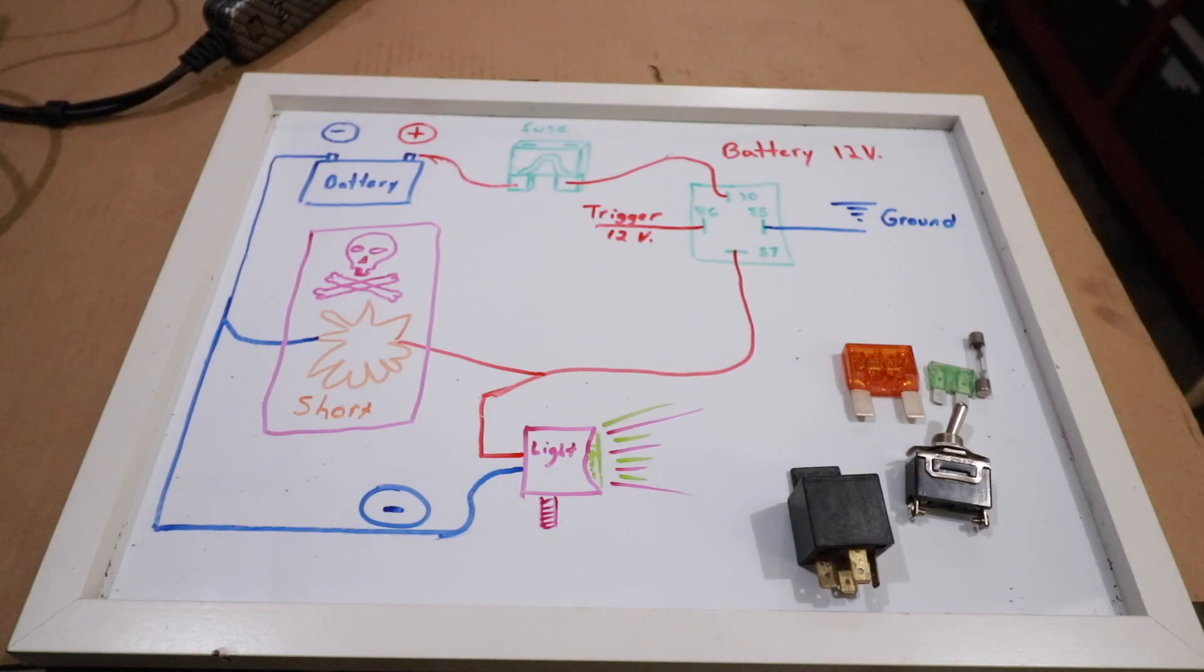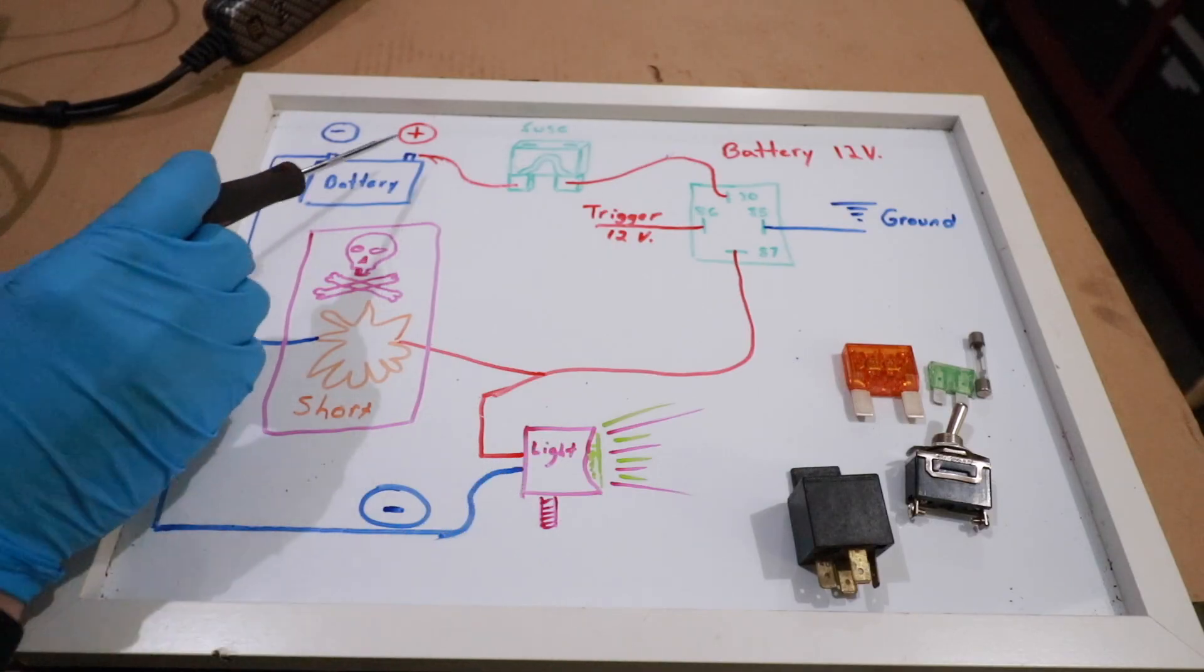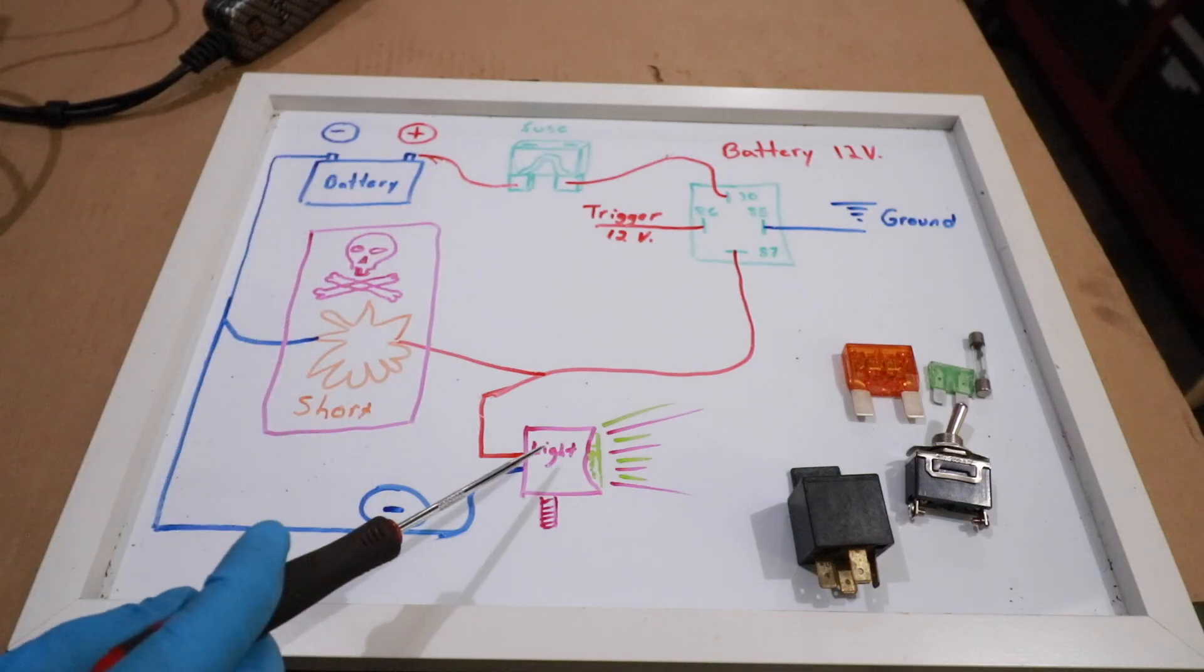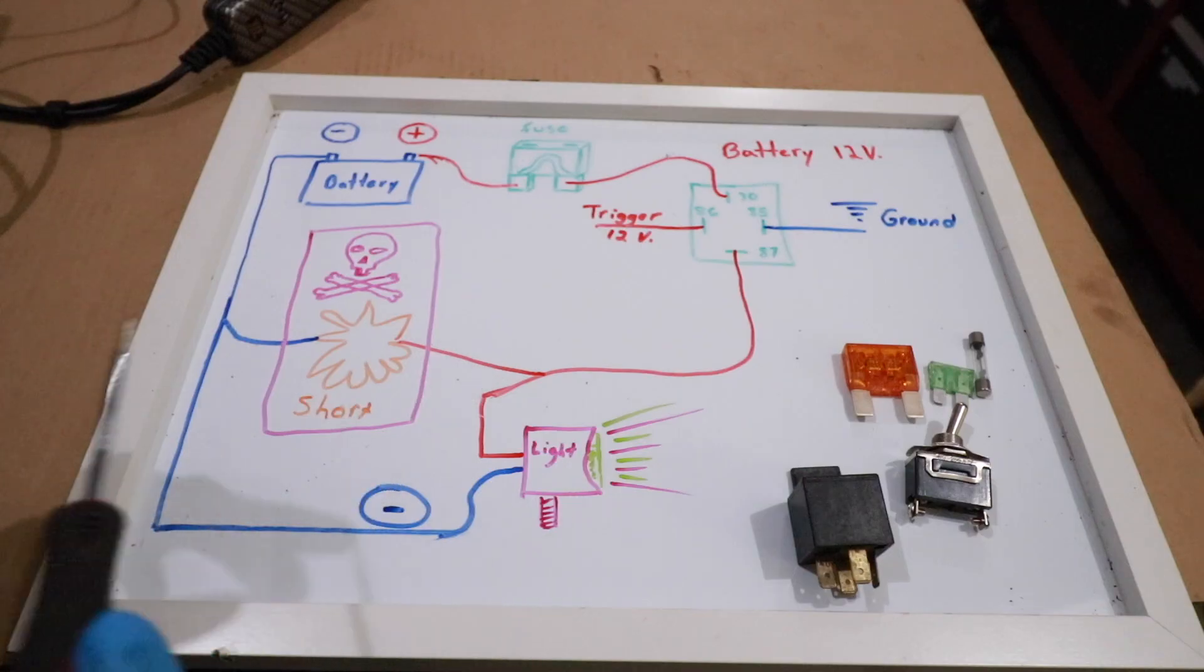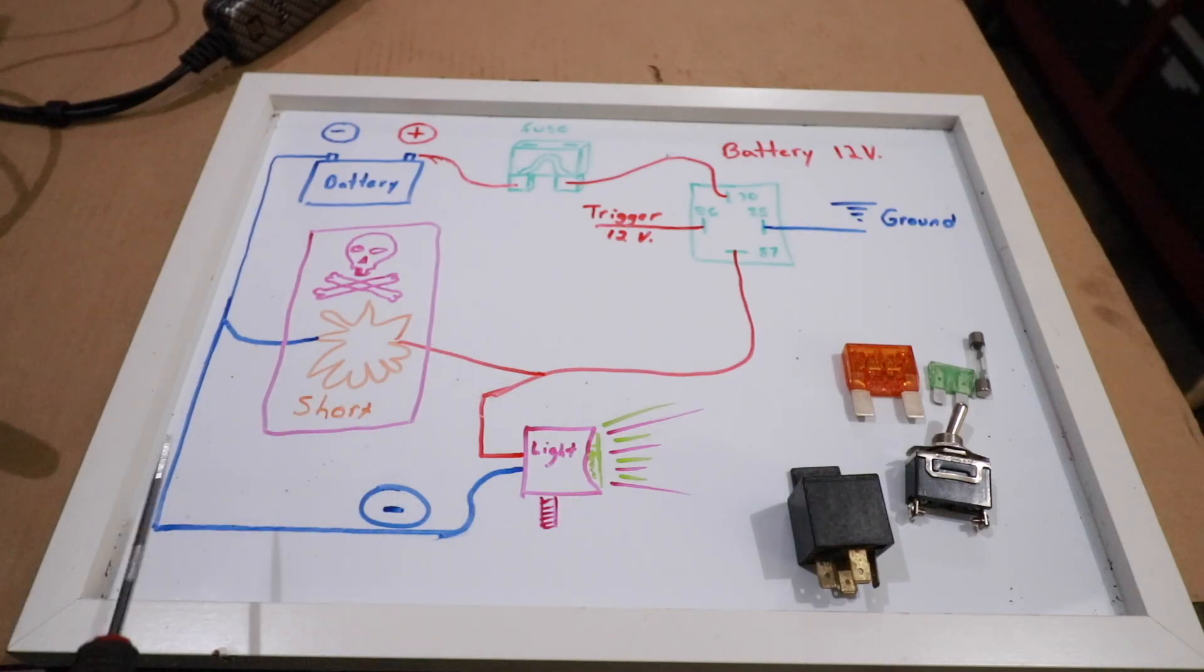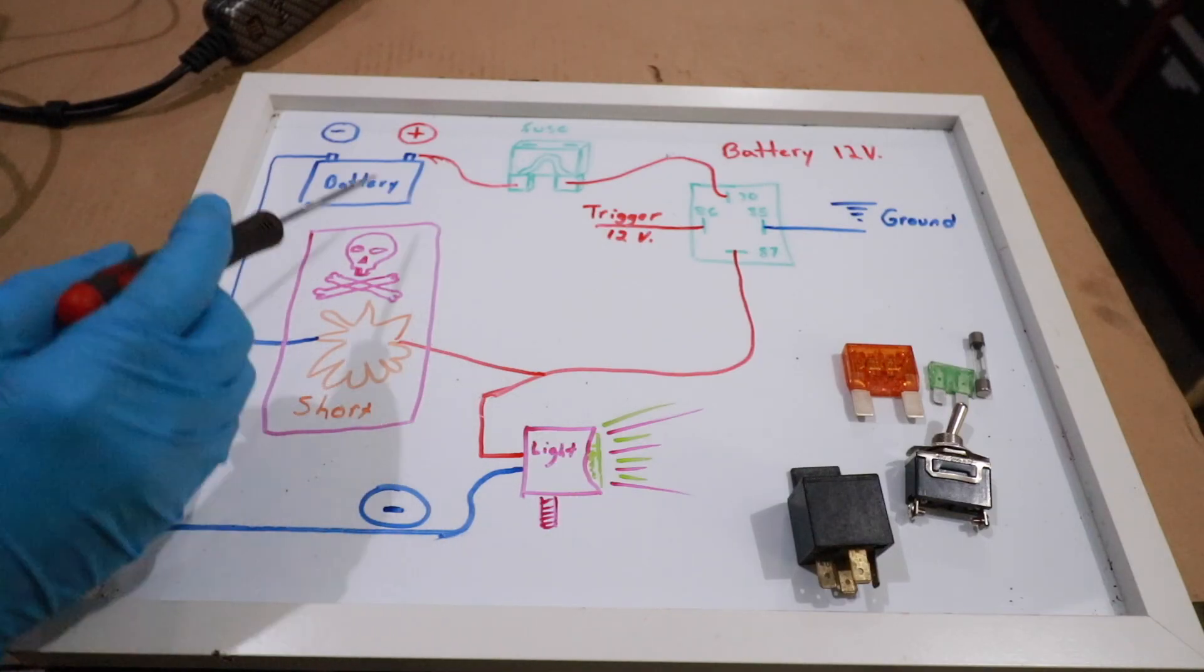When we have a short circuit, there is an issue between the positive terminal on the battery and the fixture itself. For some reason, this line has grounded. This is basically a short.